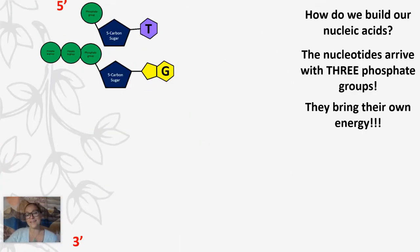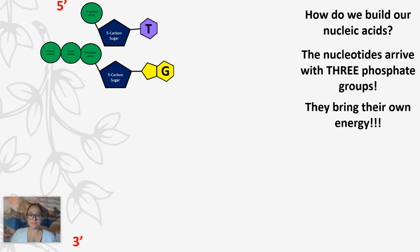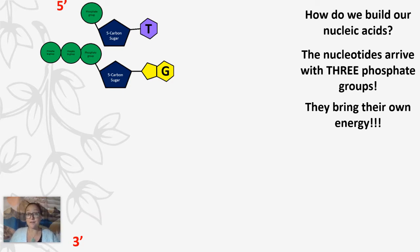When we talk about nucleic acids and how they form that sugar-phosphate backbone, that covalent bond between the phosphate group and the sugar is going to be more durable and stronger than the hydrogen bonds between the base pairs. Here I have a thymine nucleotide and a guanine nucleotide. When a nucleotide is going to be added to the growing polymer, it actually arrives with three phosphate groups. That looks very similar to ATP, which has three phosphate groups attached to it.